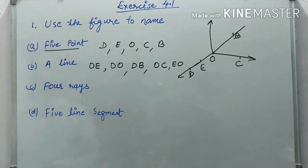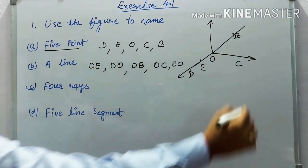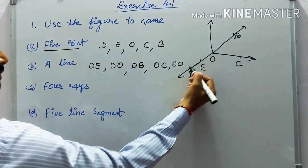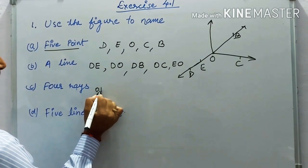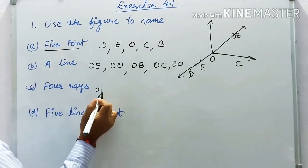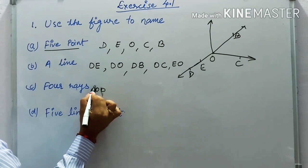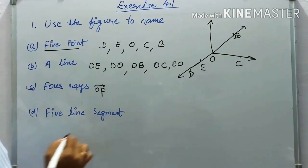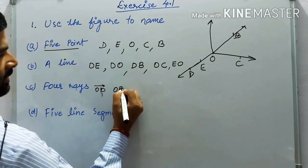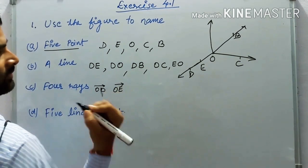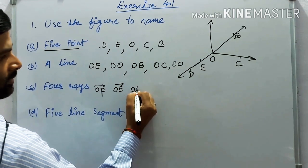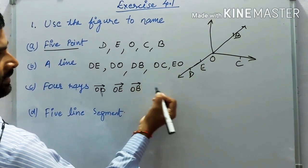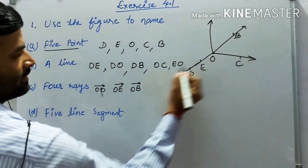Next, name four rays. A ray starts at a point and extends in one direction. The four rays are: OD, OE, OB, and OC — where O is the starting point in each case.